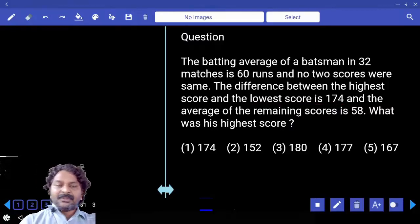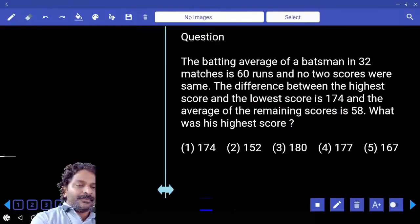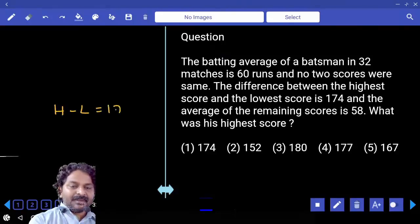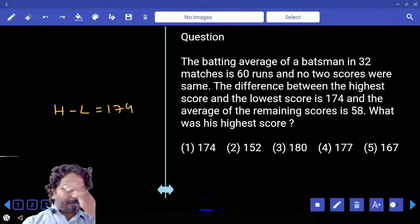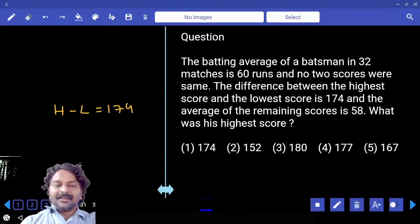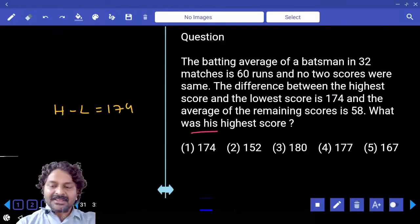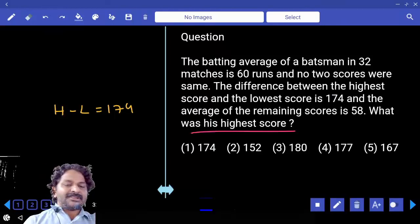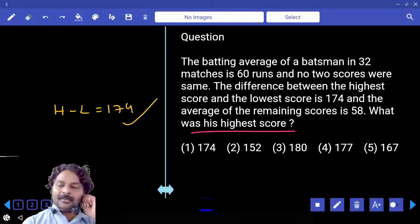So first of all, we know the highest score and the least score difference is 174, right? And then we were asked to calculate the highest score. Simple logic: the highest score must be definitely more than 174. How many options are there? If there is only one, you need not to solve.